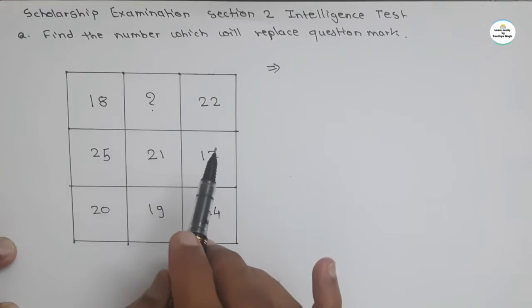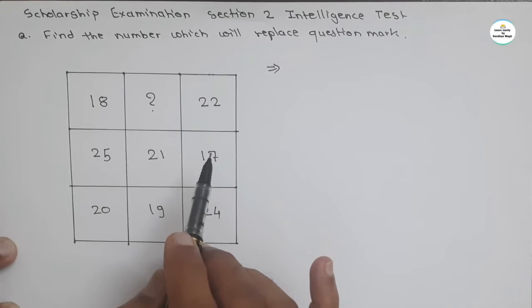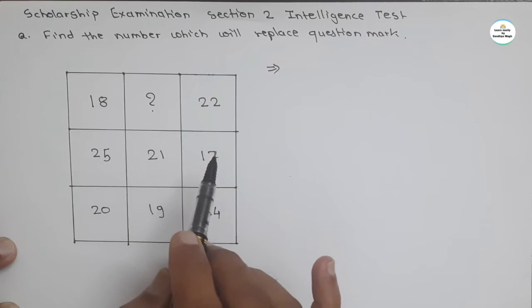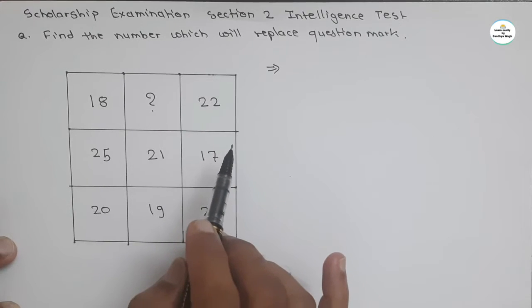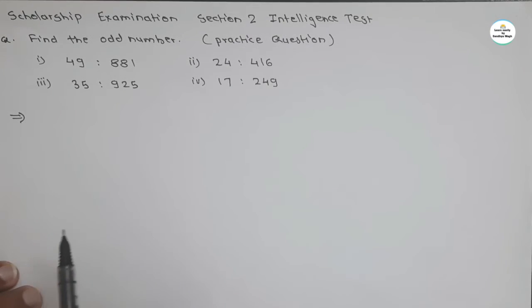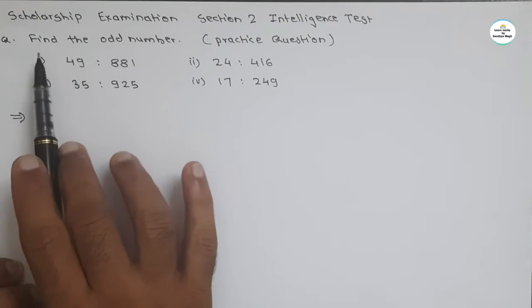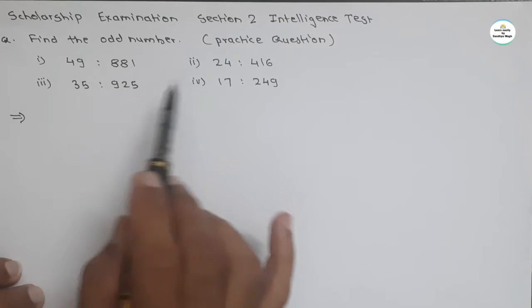But before seeing the solution of this question, let's see the solution of the practice question which was given in the previous video. This was the practice question given in the previous video. Find the odd number. These numbers are given.